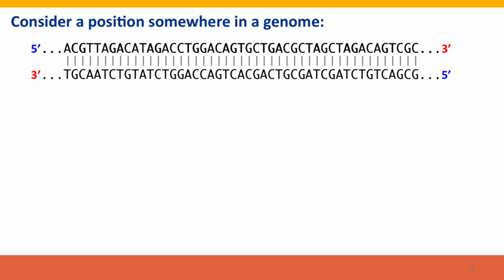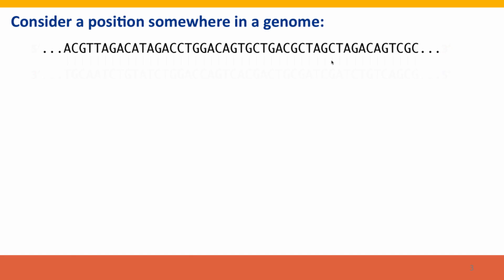We'll start by considering a position somewhere in the genome in the DNA sequence. I've shown this initially showing both strands with bars indicating the base pairing, but we don't need any of this because we know the conventions: when we see a single sequence of a single strand of DNA, the left end is the 5' end, and the complementary strand would have the complementary sequence.